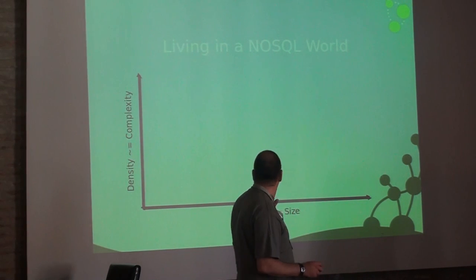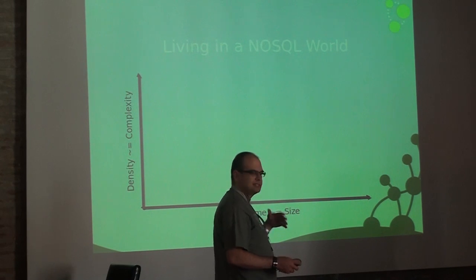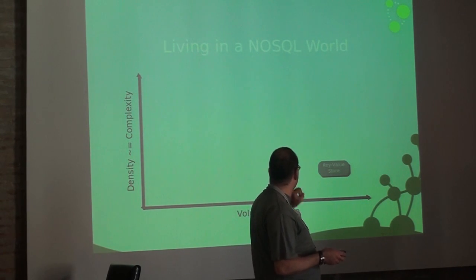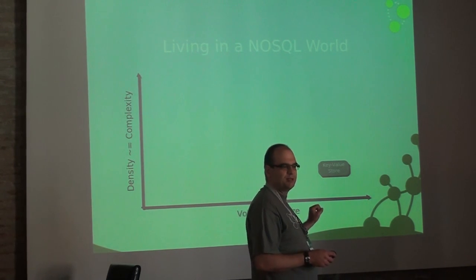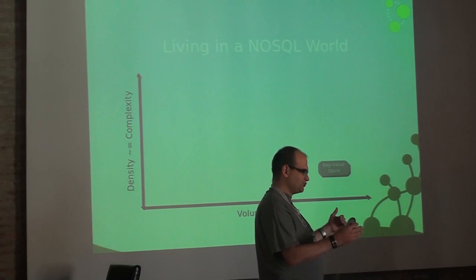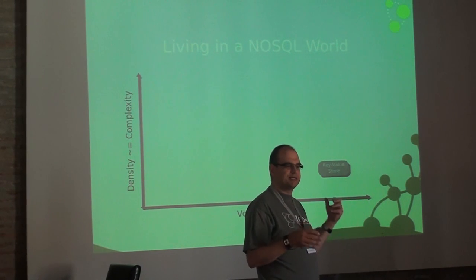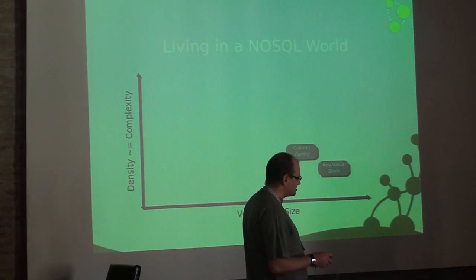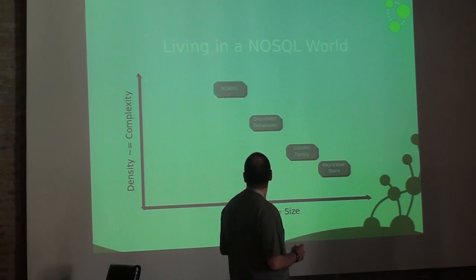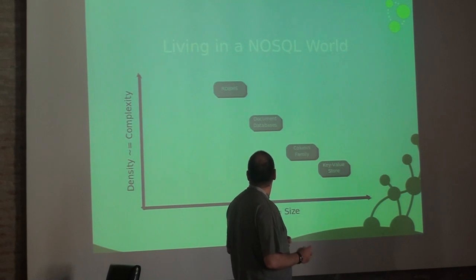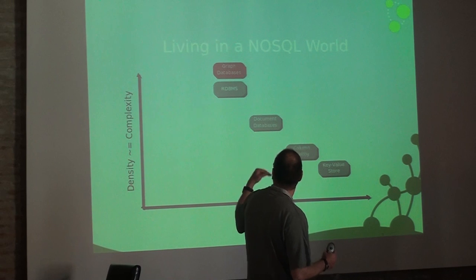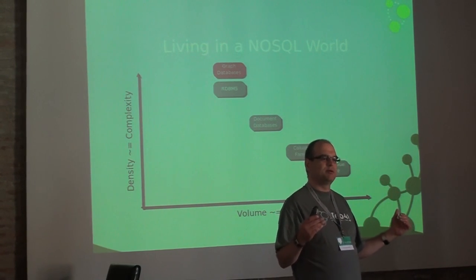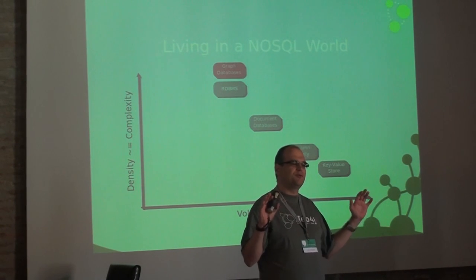Charting data complexity versus size: key-value stores are great for huge volumes because they scale massively and the data isn't really connected to other pieces, making it simple. Column families offer richer complexity but don't scale as well for size. Document databases go the same direction. Then we have relational databases and graph databases — which is our topic. Graph databases are more about data complexity than pure size. If you're talking petabytes, you need to think carefully, but at terabyte scale, we can handle that.